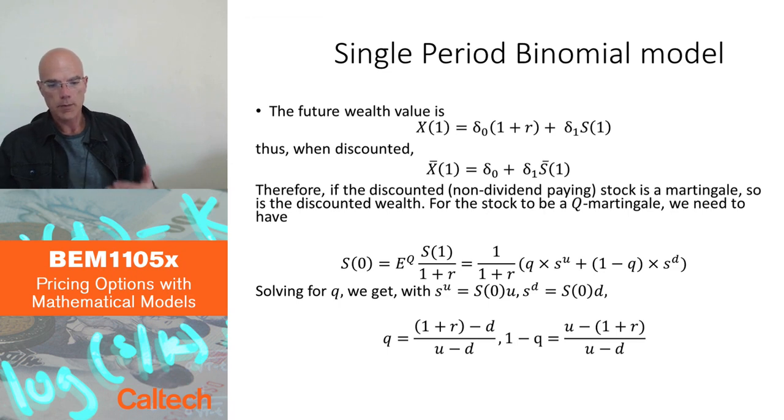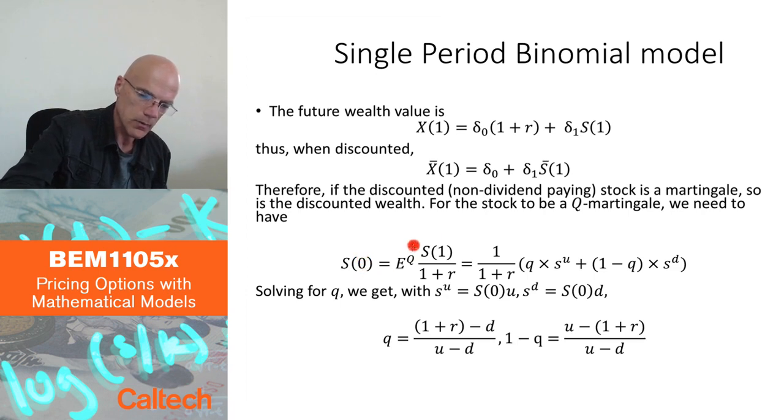All right, what does it mean in the single period model? This model simply means that today's stock price, at times zero, has to be equal to the expected value of the stock price in the future, discounted, under probability Q, which we are looking for. We are looking for this probability Q. Well, this is a simple model. There's only two possible values for the stock, SU and SD. How do you compute expectation of a random variable like that? You multiply SU by its probability of going up, Q, and you multiply SD by the probability of going down, which is 1 minus Q, and then just divide by 1 plus R. This is the expectation. The weighted average according to the probability is Q and 1 minus Q of the up value and of the down value.